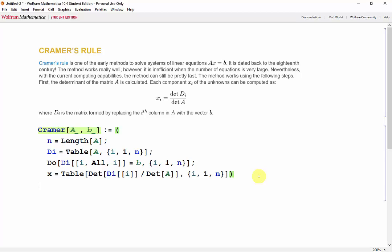Let's go ahead and test it with a simple matrix. So Cramer and we'll just make the identity matrix. And then our solution set will just be 1, 2, and 3.